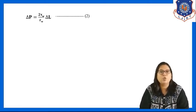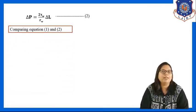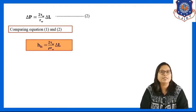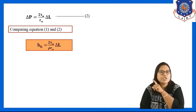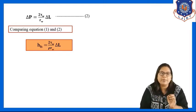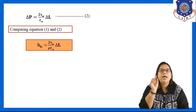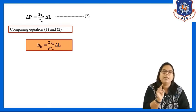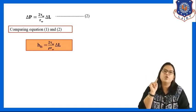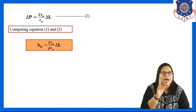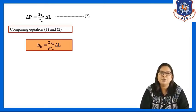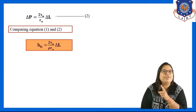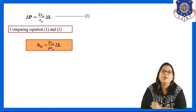Comparing Equation 1 (Hfs = delta P / rho) and Equation 2 (delta P = 2*tau_w * delta L / rw), we substitute delta P to get Hfs = 2*tau_w * delta L / (rho * rw). This equation gives the relation between skin friction and wall shear.